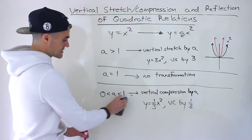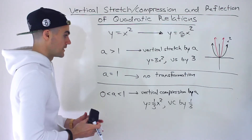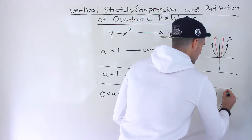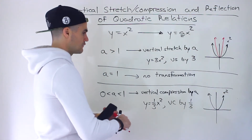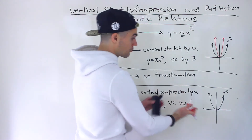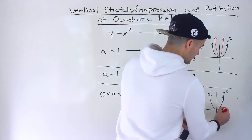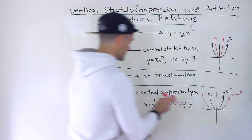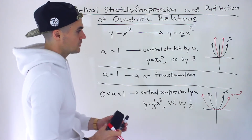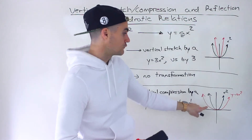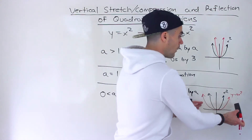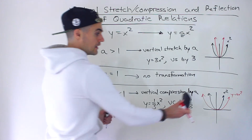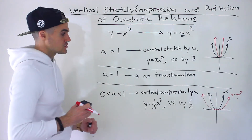The way a vertical compression looks graphically: if we have the base function x squared, and we end up with an a value between zero and one, it's going to be vertically compressed. That means the function ends up wider — y equals ax squared where a is between zero and one. Notice the difference between a vertical stretch, which looks narrow, and a vertical compression, which looks wider. If you plot x squared and then 0.5x² or 0.1x² on Desmos, that's how the transformed graph looks.